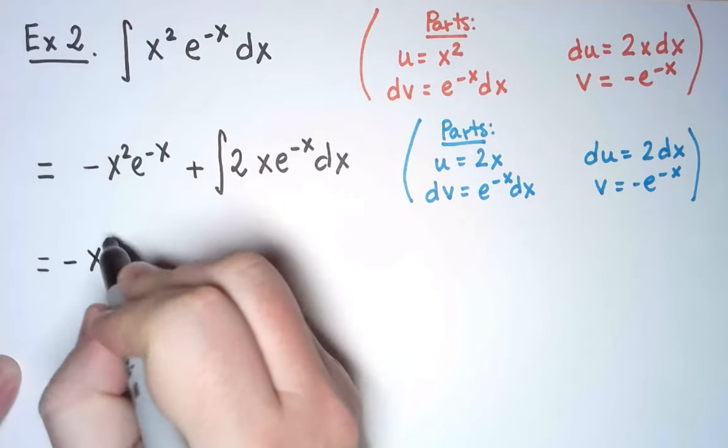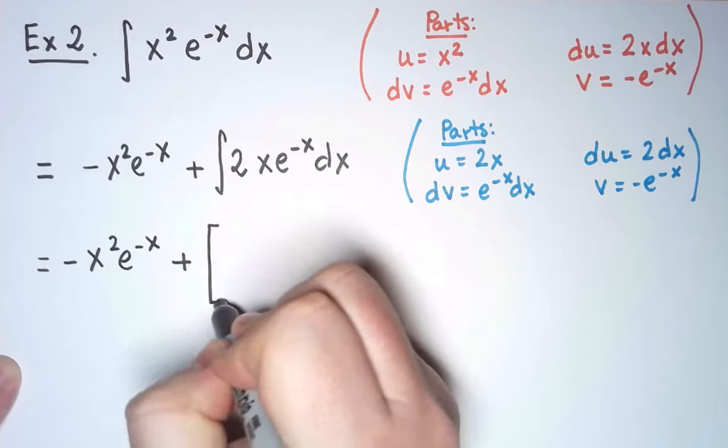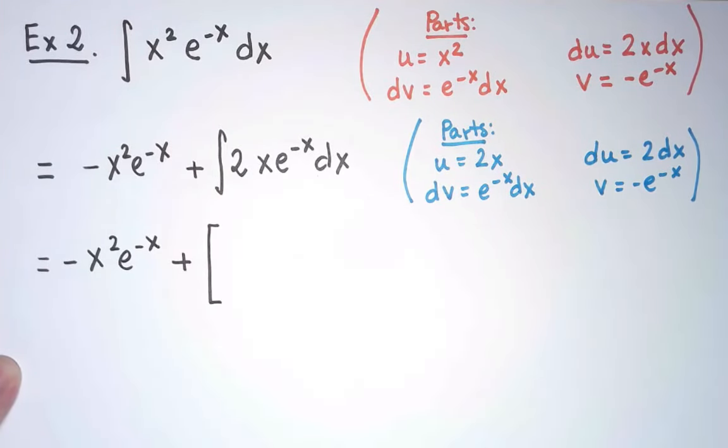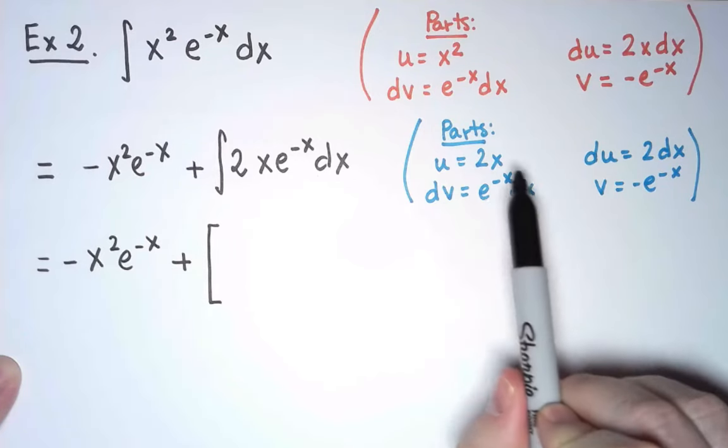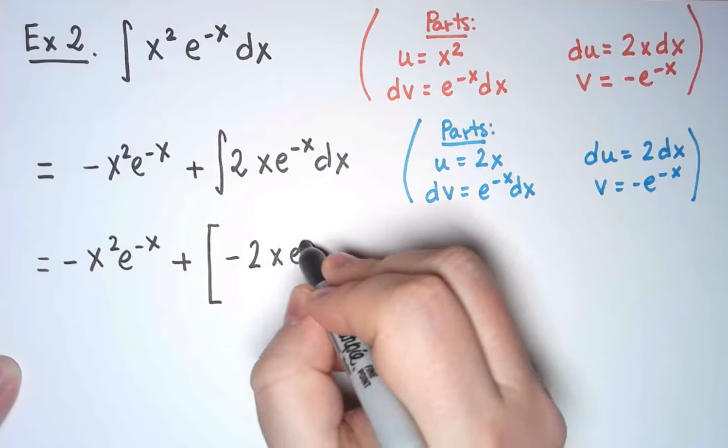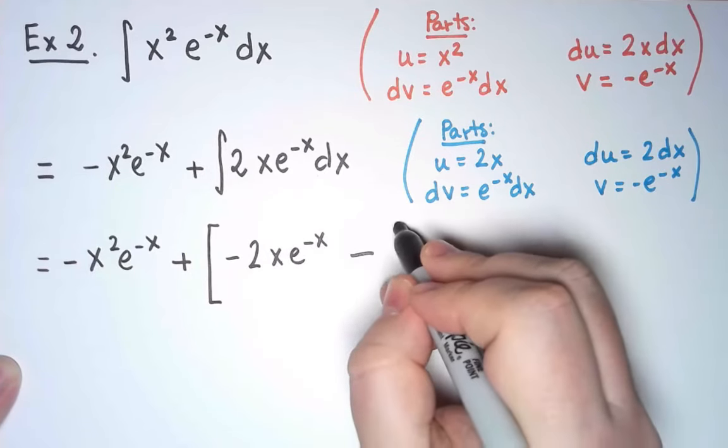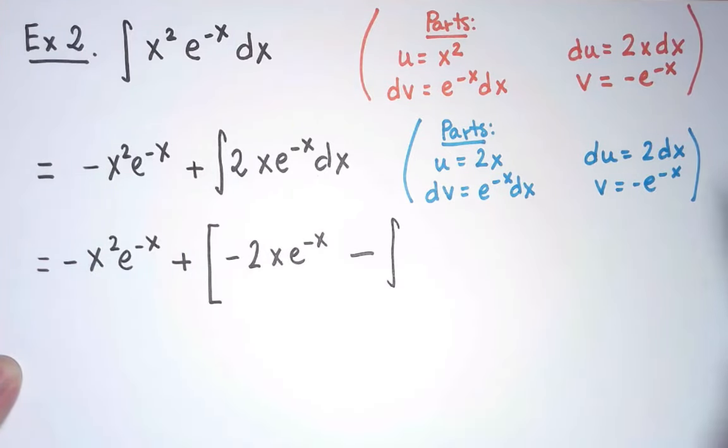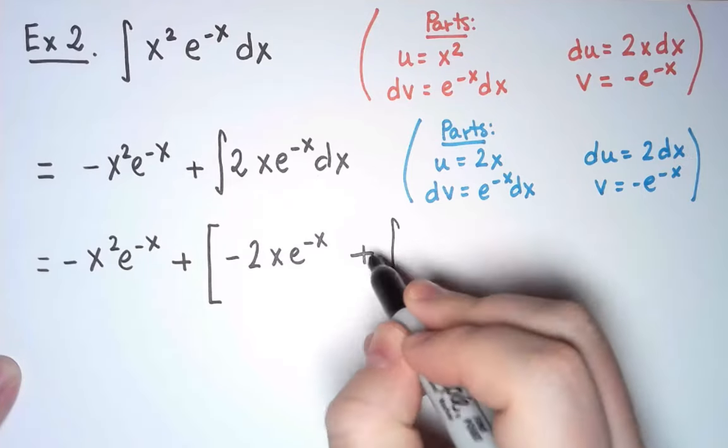First, I keep the term that was already there, and with integration by parts, I should get u times v, which is minus 2x e to the minus x, minus the integral of v du, which is minus 2 e to the minus x dx.